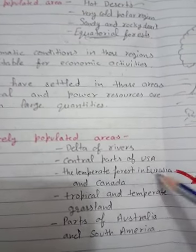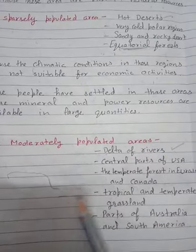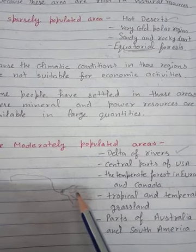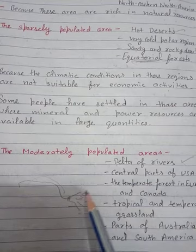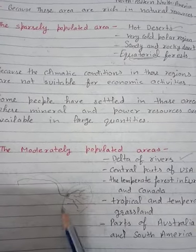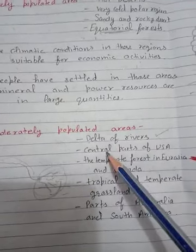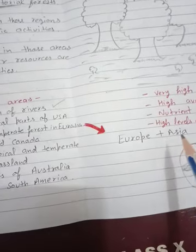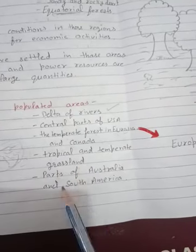Moderately populated areas include the deltas of rivers. A delta forms when rivers meet the sea or ocean — the river deposits all materials in a triangle shape, and a delta is a very fertile region. Also included are the central part of the USA, the temperate forests in Eurasia and Canada — Eurasia meaning Europe plus Asia combined.